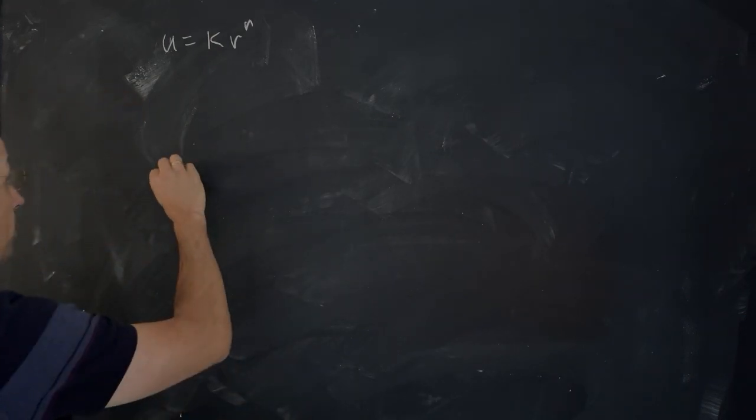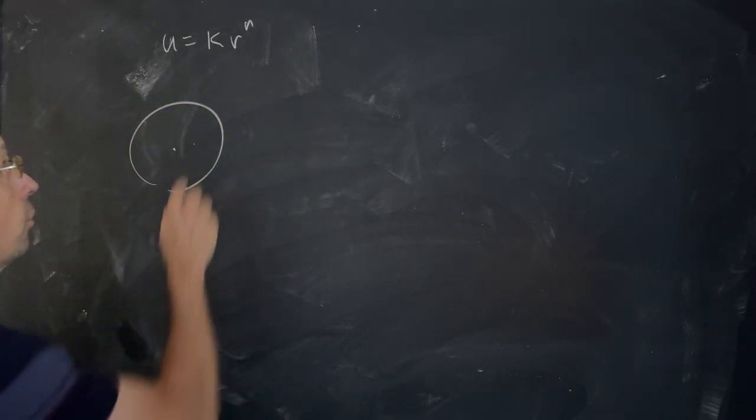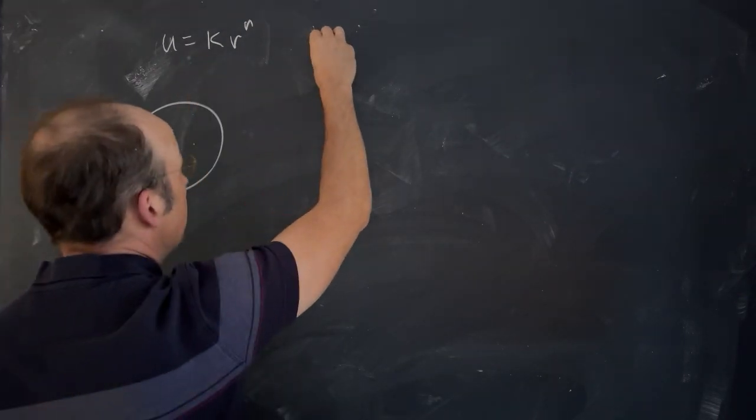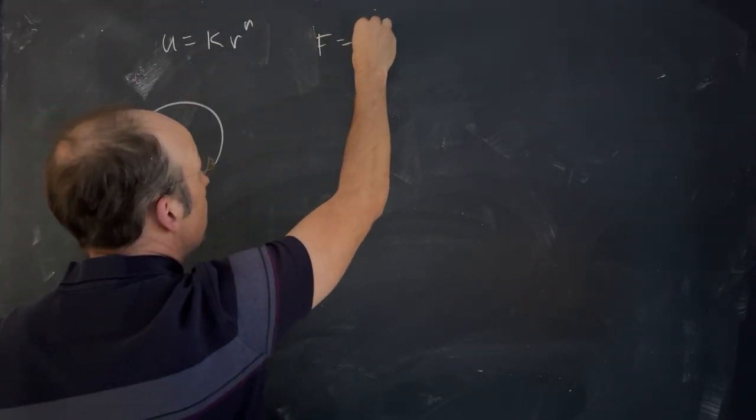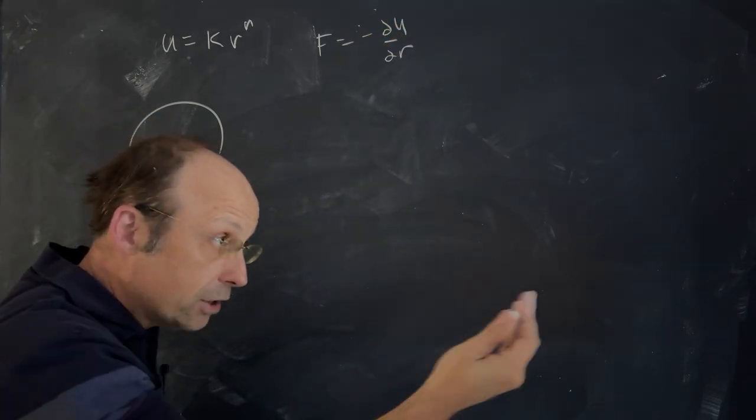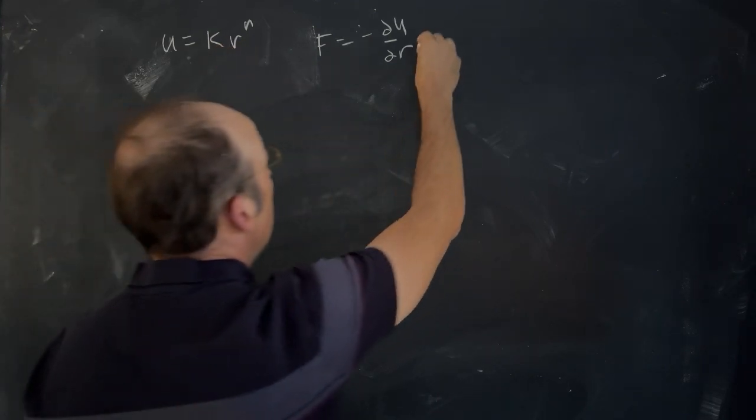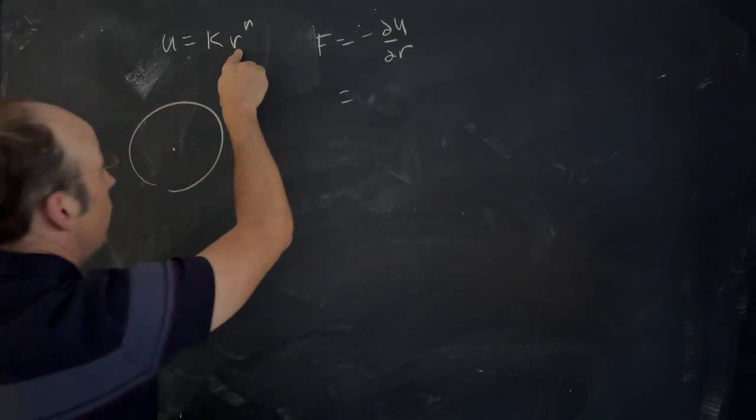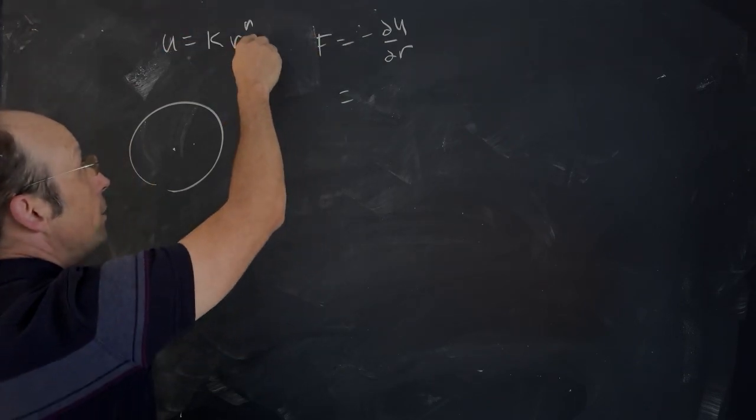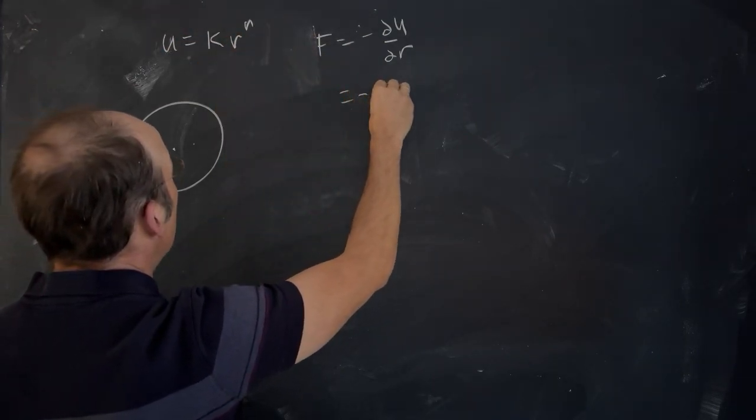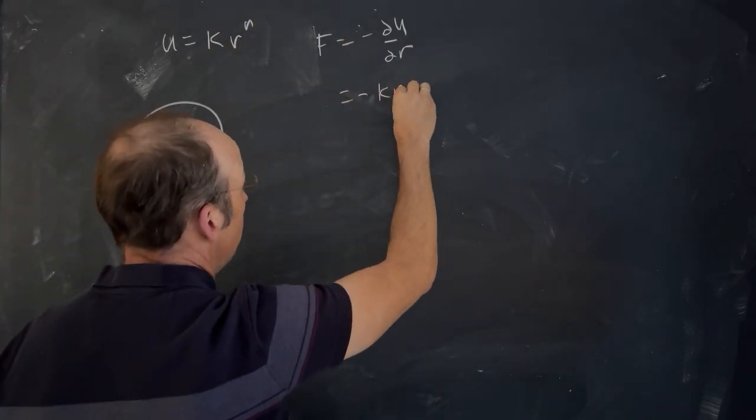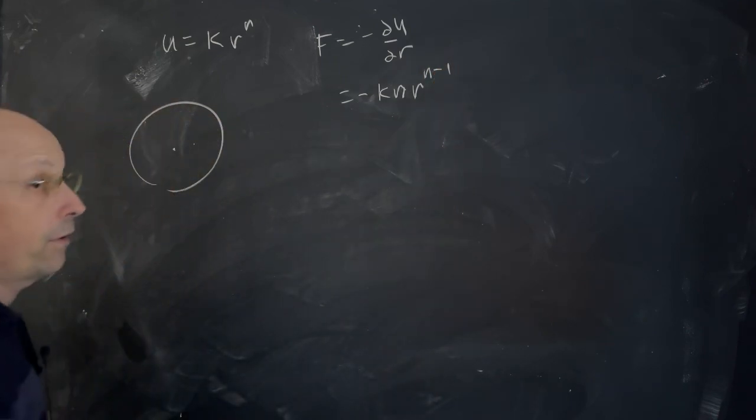The first thing I want to do is assume that it's moving in a circle. If it's moving in a circle with that potential, I can find the force. So the force is negative the partial of U with respect to r. I can take the derivative using the power rule. So the force is going to be negative k n r to the n minus 1. That's my force.